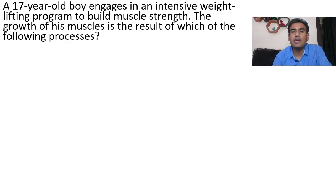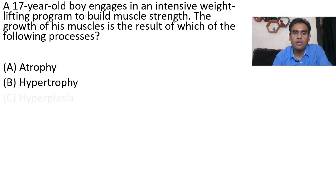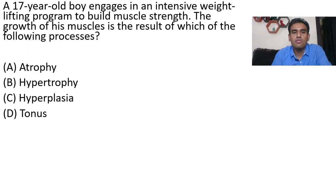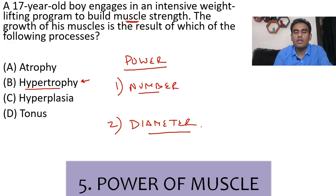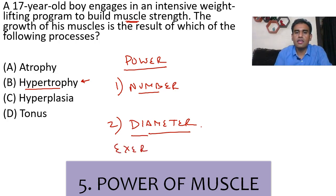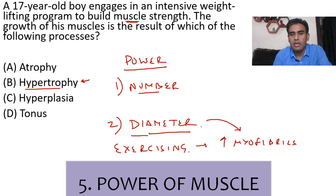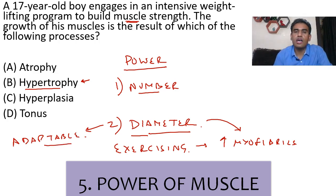Here's a question: a 17-year-old boy engages in an intensive weight-lifting program to build muscle strength. The growth of his muscles is a result of which of the following processes — atrophy, hypertrophy, hyperplasia, or tonal? The correct answer is option B — hypertrophy. The power of a muscle depends on two things: the number of muscle fibers and the diameter of muscle fibers. The boy is exercising, building more myofibrils and increasing the diameter of his muscle fibers. This adds to another property of muscle fibers — they are adaptable.